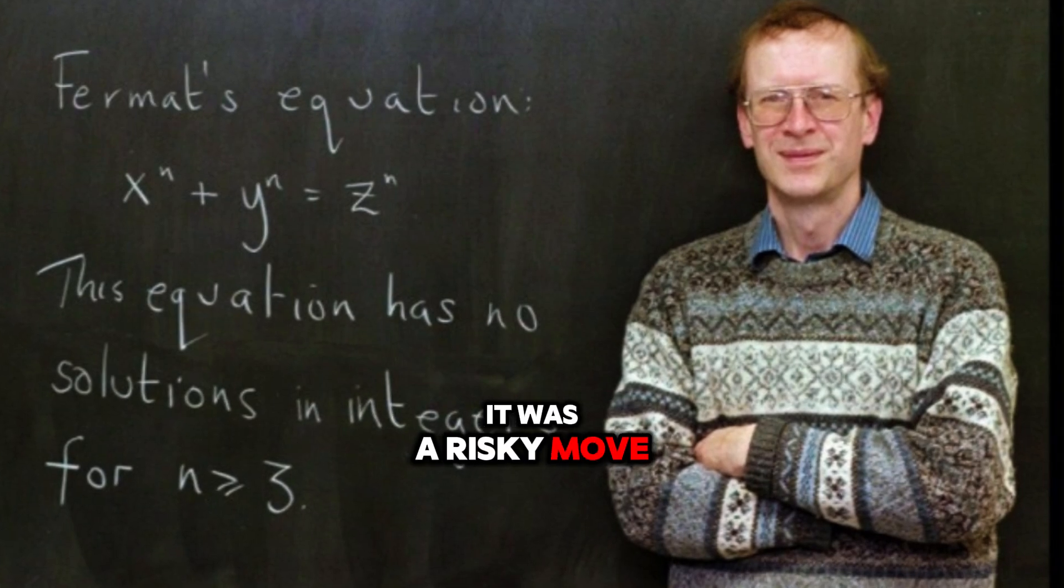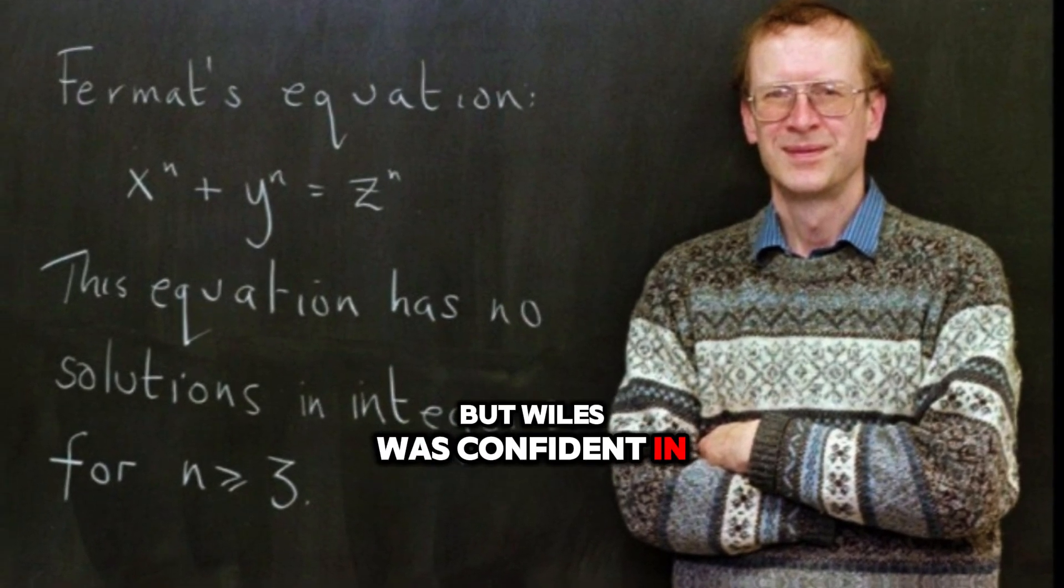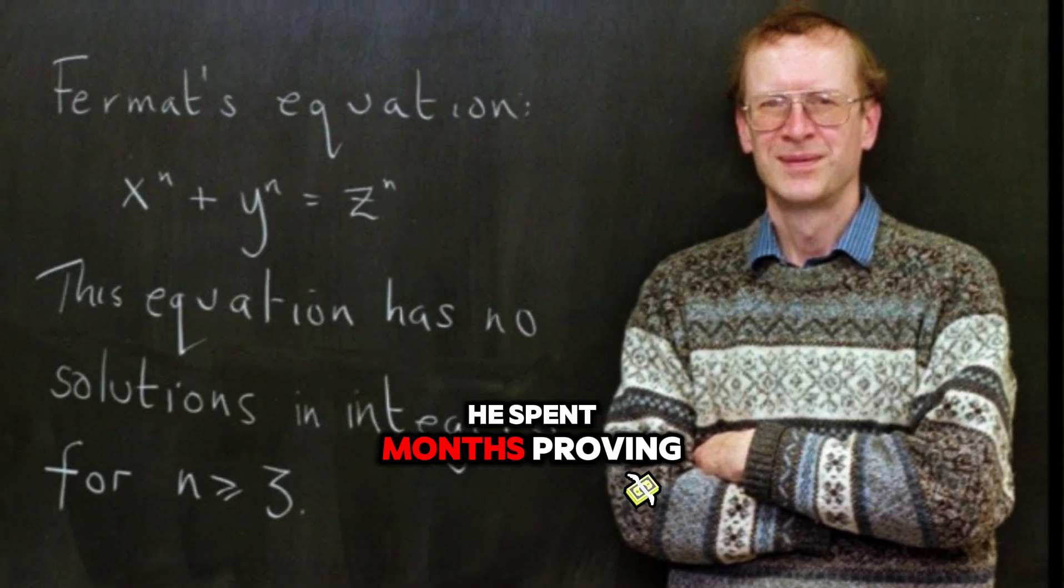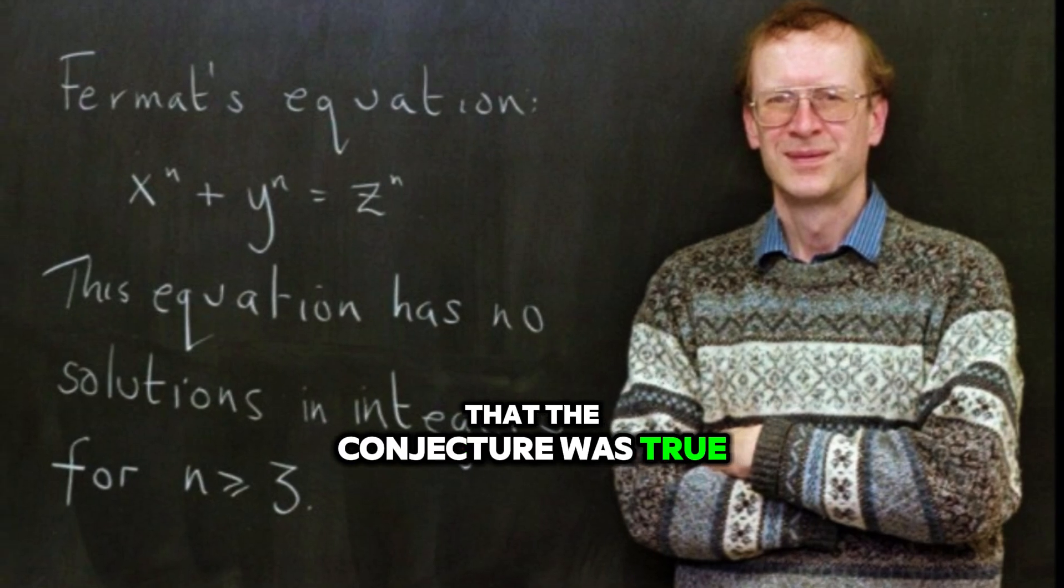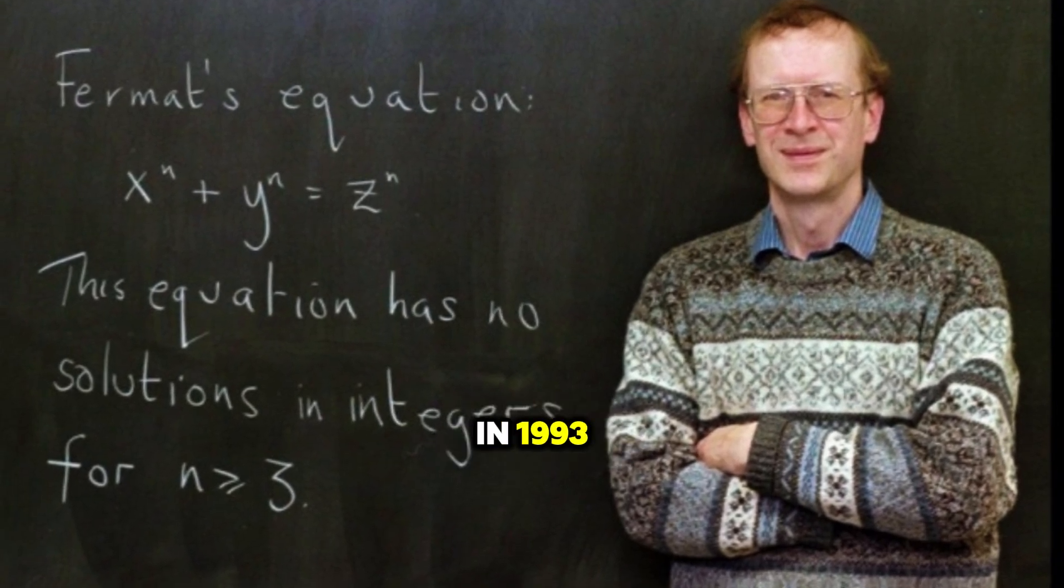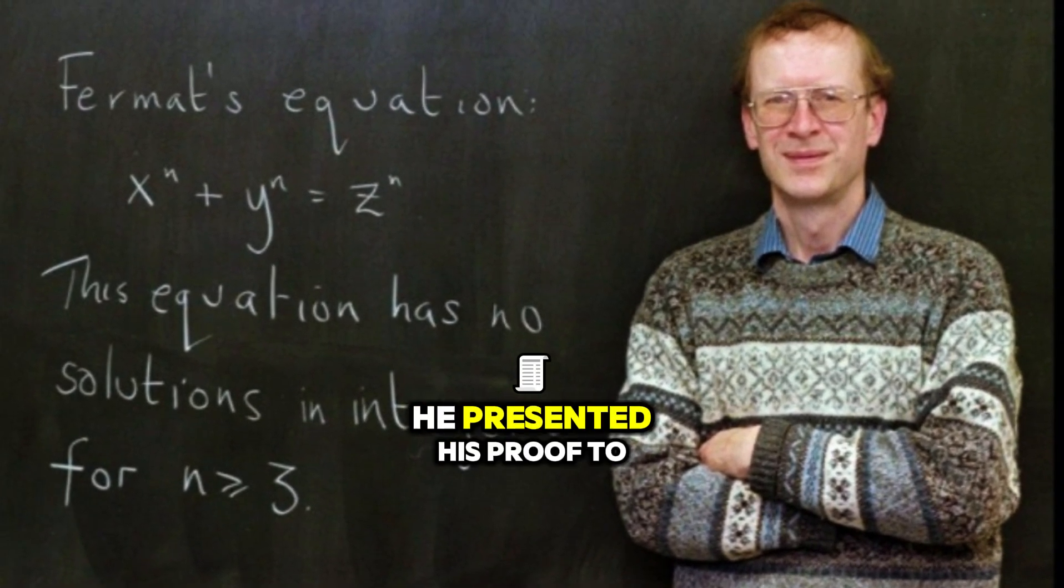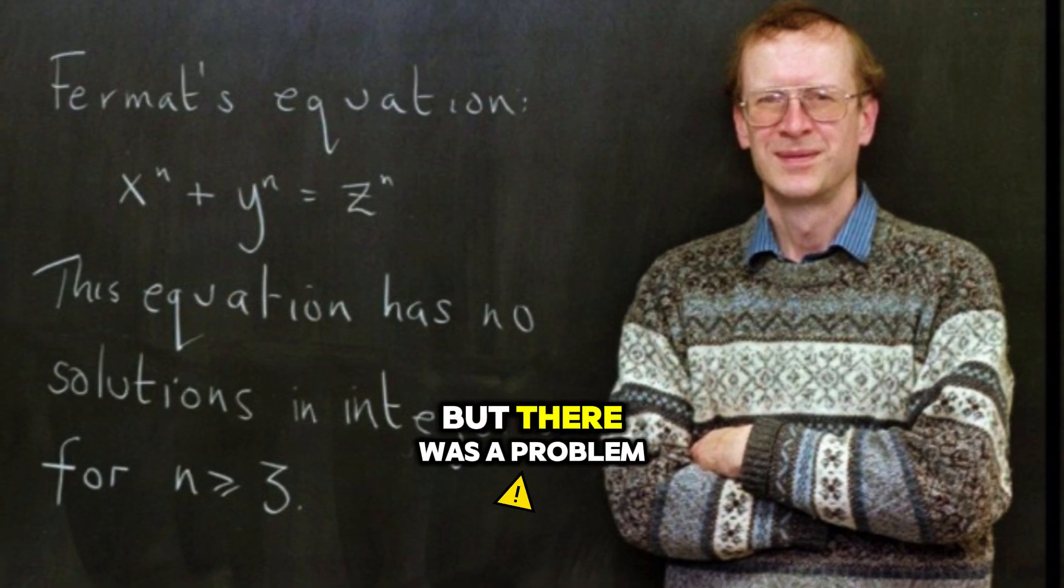It was a risky move, but Wiles was confident in his approach. He spent months proving that the conjecture was true in certain cases. Then, in 1993, he presented his proof to the world. But there was a problem.